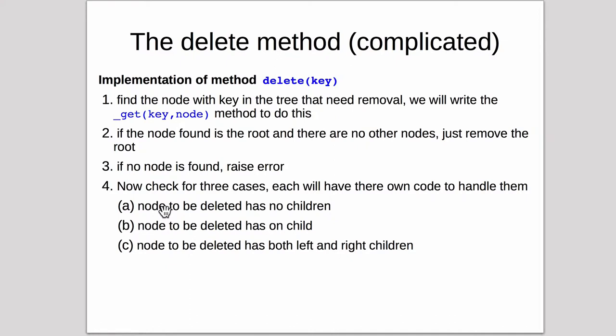One is where the node to be deleted has no children, that's the simplest case. Where the node to be deleted has only one child, there's that case. And where the node to be deleted has both left and right children is the most complicated case.